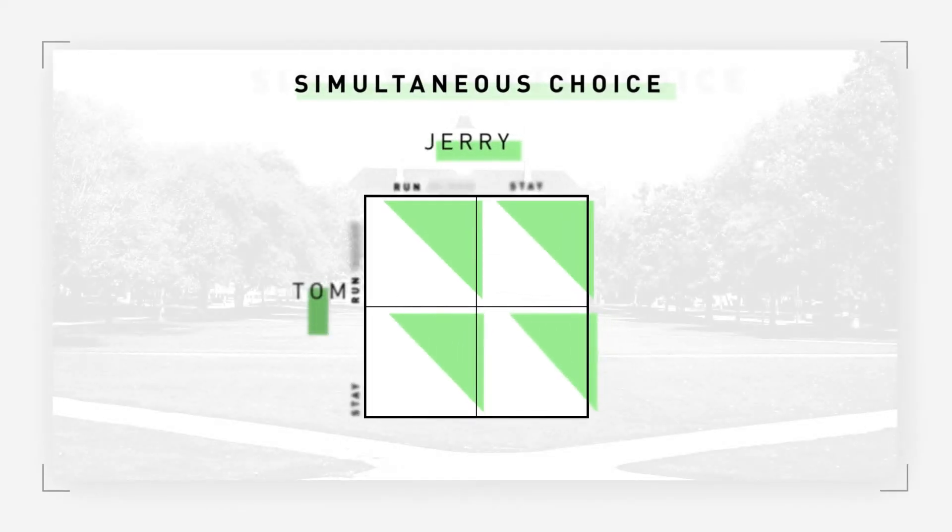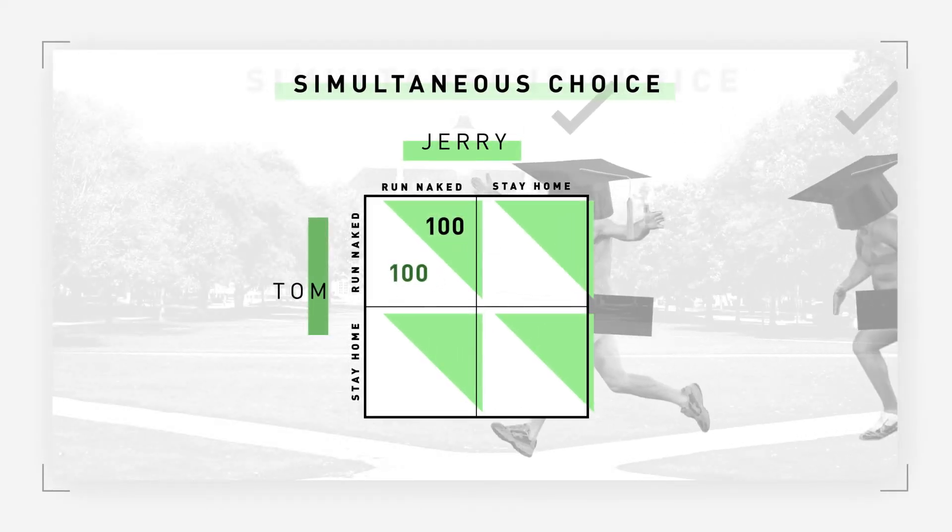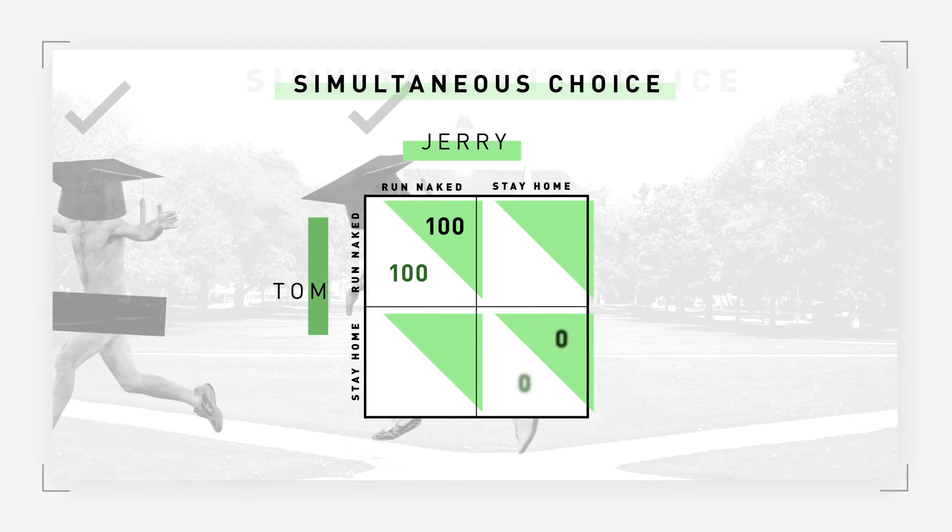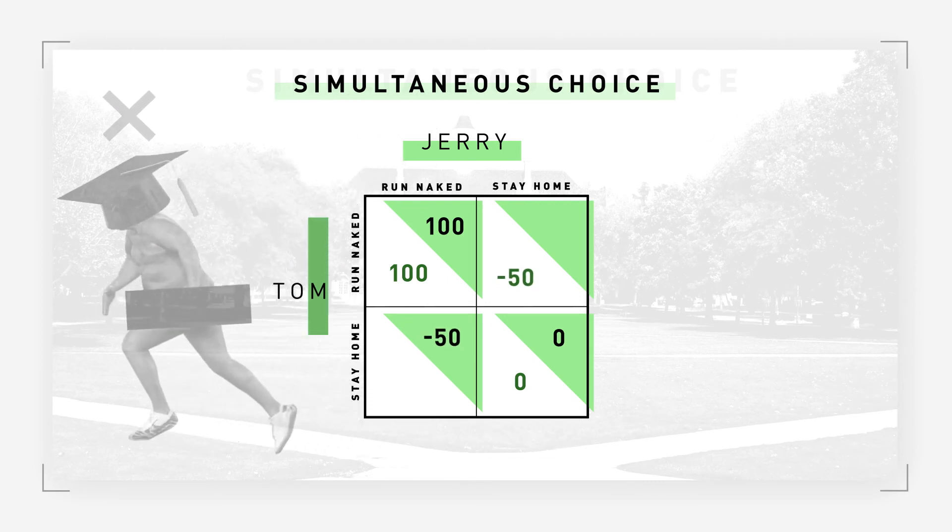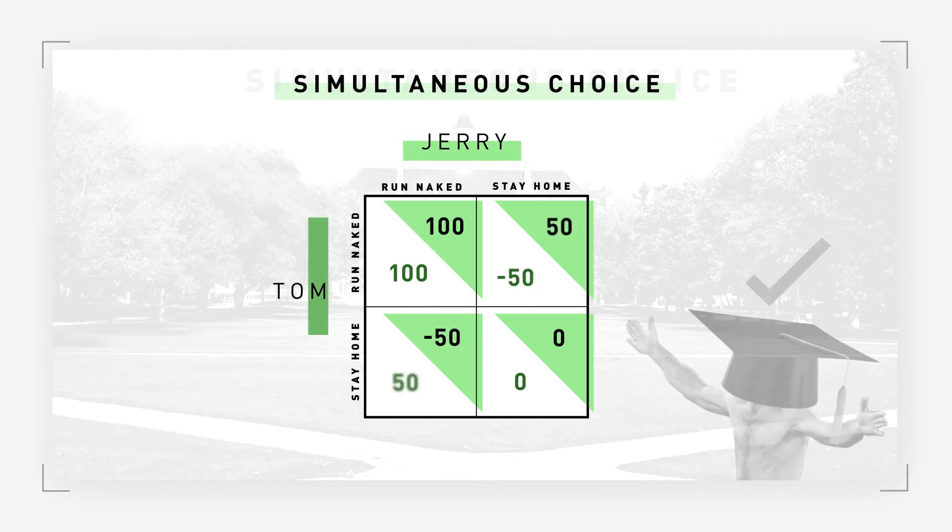In the simultaneous choice game, enough risk aversion and uncertainty may lead both players to stay home in their pajamas rather than risk a charge of public indecency. Here's what it would look like in a payoff matrix. Suppose going naked together gives both players 100 points and staying home is neutral, so they stay at zero. Streaking the quad alone yields the humiliation payoff of minus 50, but it also gives the other player plus 50 because he finds it funny.